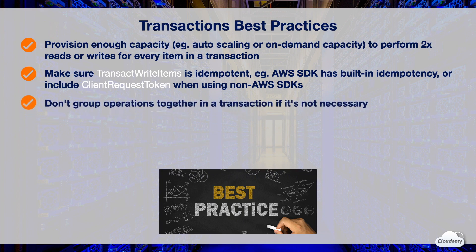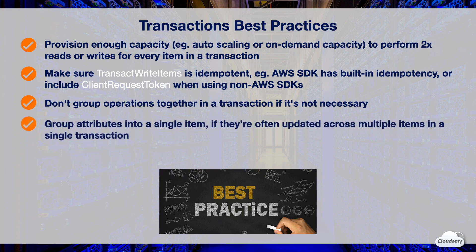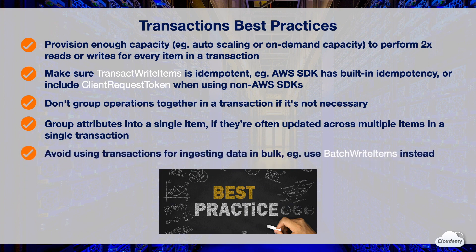Do not group operations together in a transaction unless it's necessary. If a group of operations can return the same result individually as if they were in a single transaction, you should split up the transaction to improve throughput. If a set of attributes is often updated across multiple items in a single transaction, you can group these attributes into a single item to reduce complexity. You should avoid using transactions to ingest data in bulk — for bulk write operations, use BatchWriteItems instead.